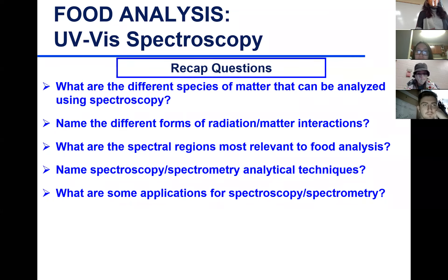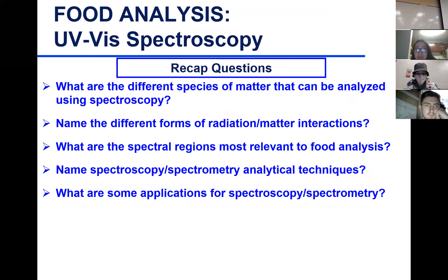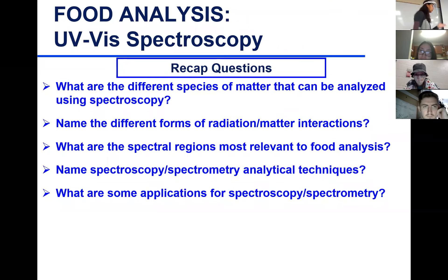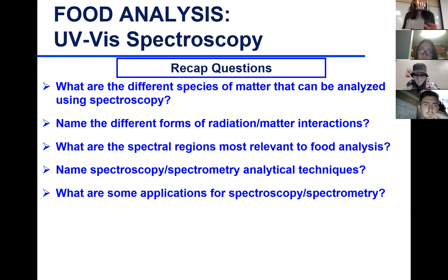Name the different forms of radiation-matter interactions. We have so many different forms. Dan said absorption, emission, light scattering, refraction or diffraction, reflection, interference — these are all interactions between matter and radiation.